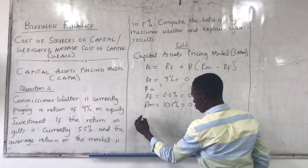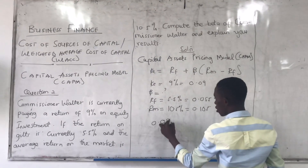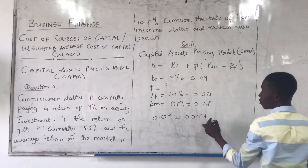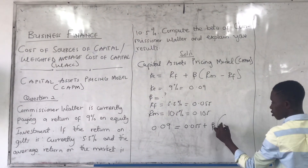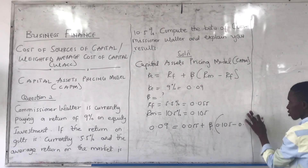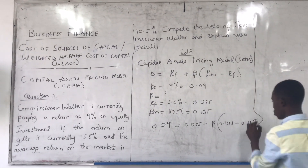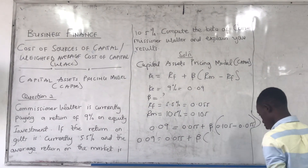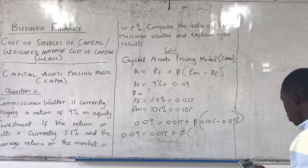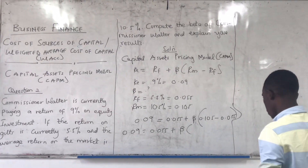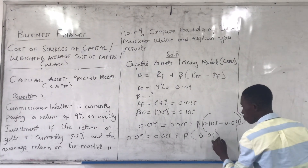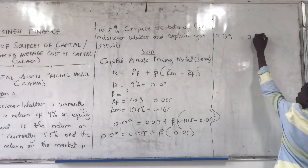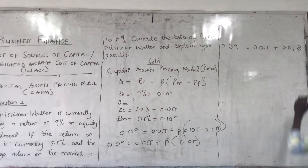Now we substitute into the formula: 0.09 = 0.055 + beta × (0.105 − 0.055). Solving the bracket: 0.105 − 0.055 = 0.05. So we have: 0.09 = 0.055 + 0.05 × beta. We are solving for beta, so we rearrange.